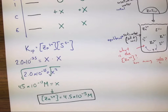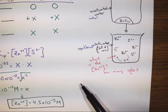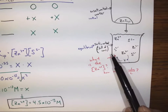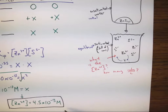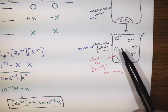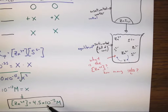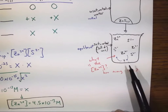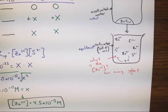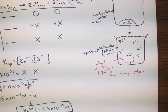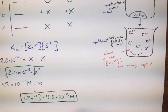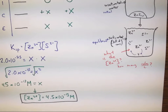That answers the question we were asked originally. The concentration of zinc ions at equilibrium was 4.5 times 10 to the negative 13 moles per liter. If you had a liter, you'd have about 4.5 times 10 to the negative 13, which is like 4.5 ten-trillionths of a mole for every one liter — a very low concentration.